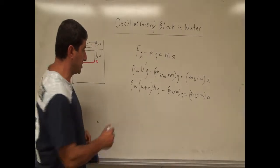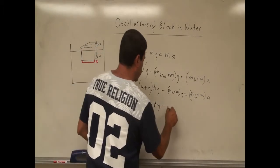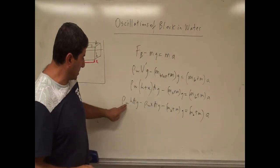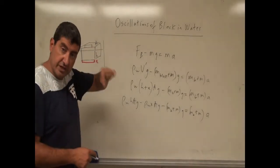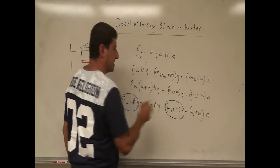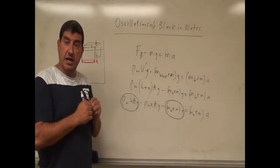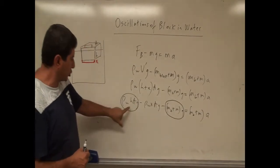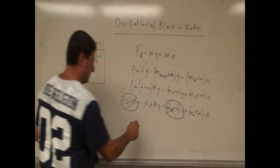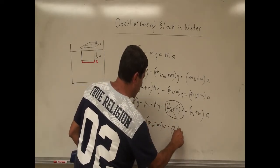I can divide this into two parts: density of water times H times A times G, minus density of water times X times A times G, minus mass of block plus M times gravity, equals mass of block plus M times acceleration. Now the density of water times the natural height H times A times G is actually equal to mass of block plus M times gravity — that's the whole definition of H, the natural equilibrium depth. So those two terms cancel. You're left with: zero equals M_B plus M times acceleration, plus density of water times A times G times X.